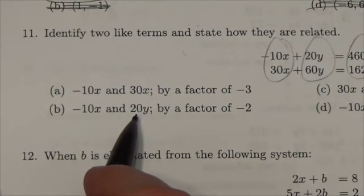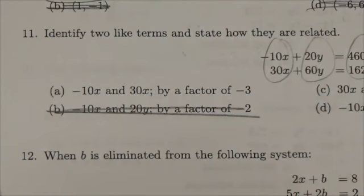B is negative 10x and 20y. Well, those aren't like terms. It can't be this thing.